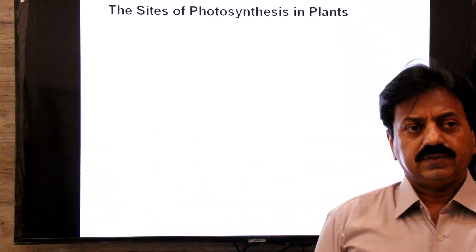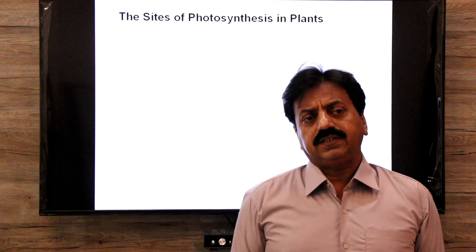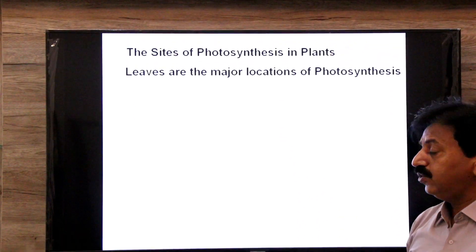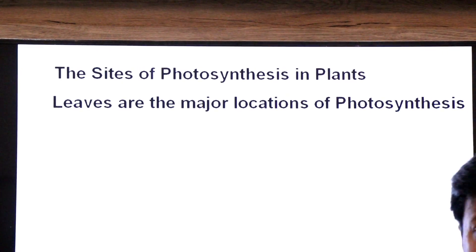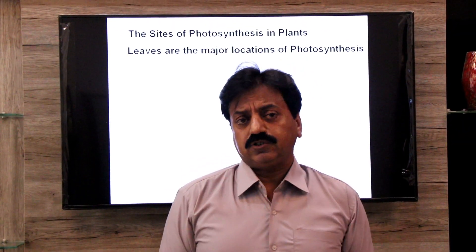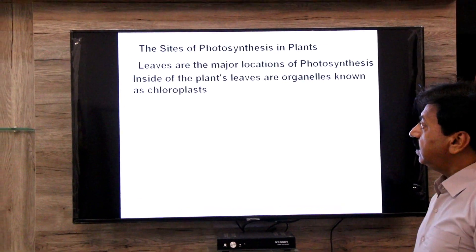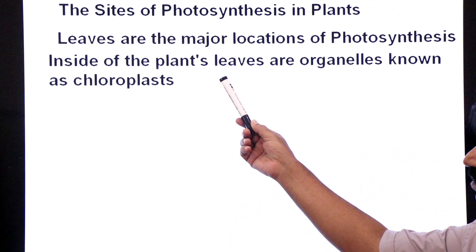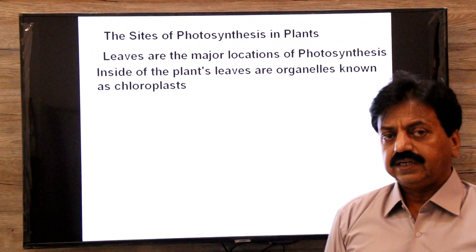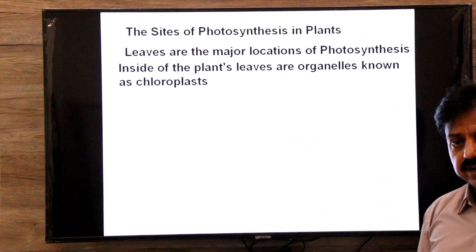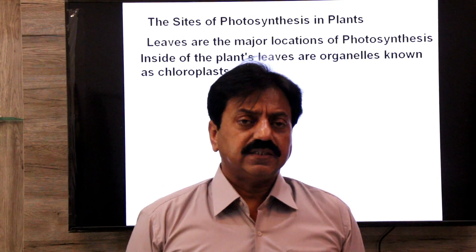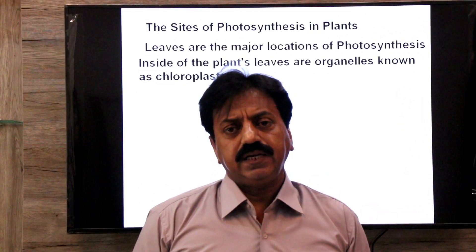Now, the sites of photosynthesis. Photosynthesis takes place in leaf cells — leaves are the major locations. Inside the plant leaves there is a specialized photosynthetic organelle called the chloroplast. We will look at the structure of the chloroplast and identify which parts carry out the light reaction and which carry out the dark reaction.